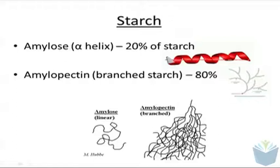Amylose is quite compact and therefore can be stored in high quantities. Amylopectin is much more branched and is used for quick energy release — because of the branching, the glucose can be quickly separated off. Both amylose and amylopectin have the monosaccharide glucose as their constituent.